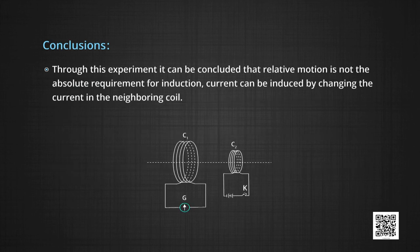Through this experiment, it can be concluded that relative motion is not the absolute requirement for induction. Current can be induced by changing the current in the neighboring coil.